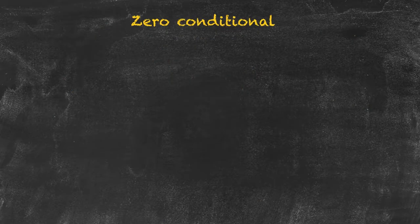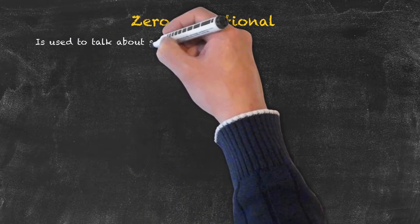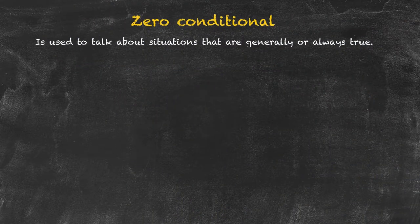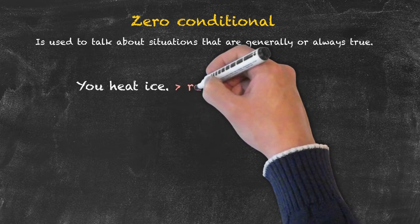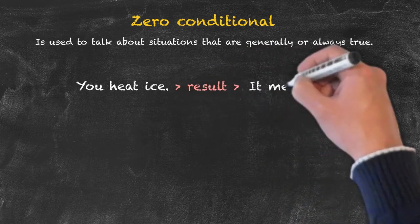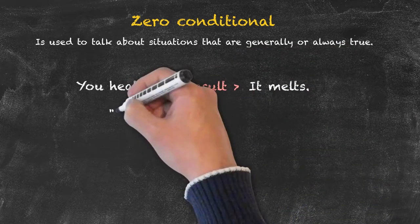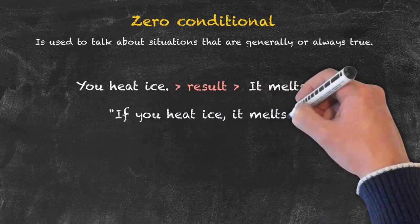Let's start by having a look at the zero conditional. The zero conditional is used to talk about situations that are generally or always true, such as scientific facts. What's the result of heating ice? It melts. How can we put this in a sentence? The sentence could be: if you heat ice, it melts.